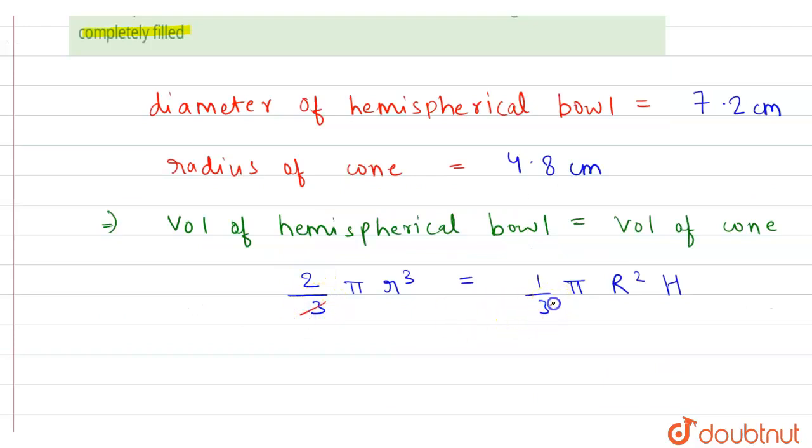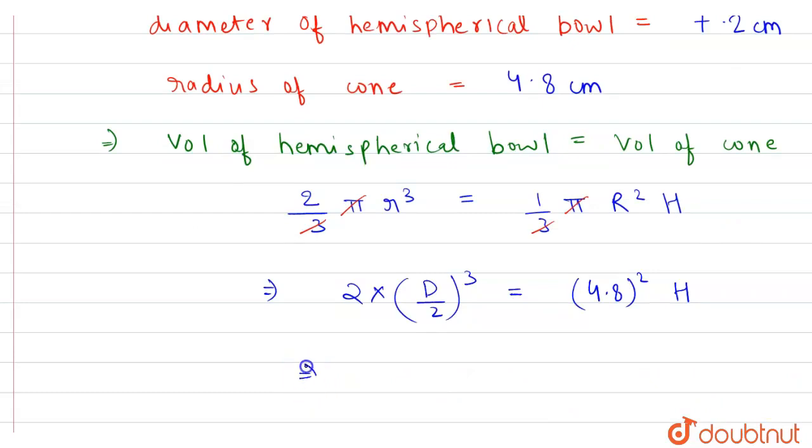So here 3 and 3 will get cancelled, π and π will get cancelled. So now we substitute the value. This will be 2 times (diameter/2)³ equal to radius of cone 4.8 squared, and we have to find h.